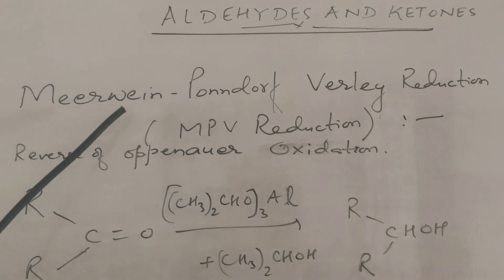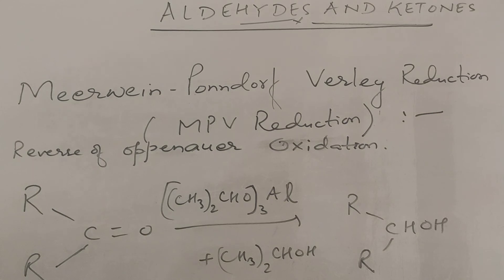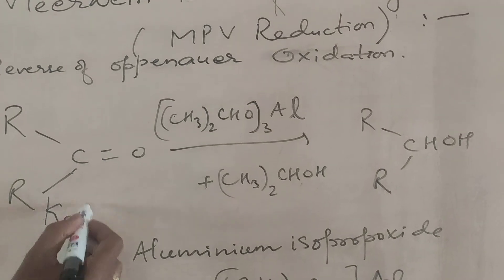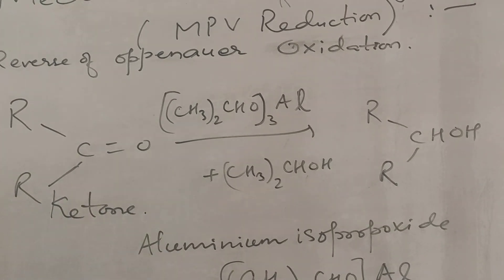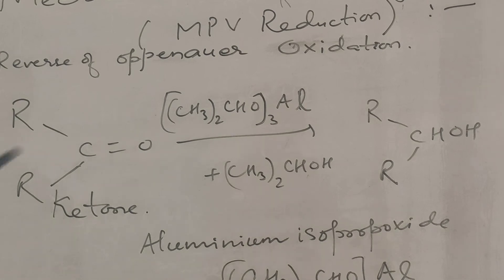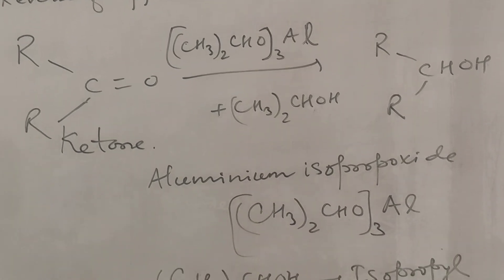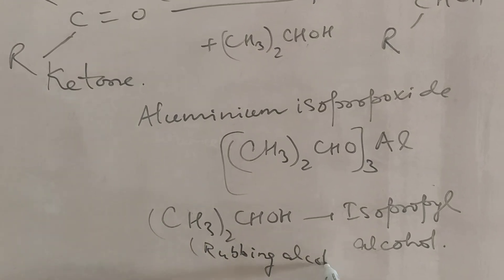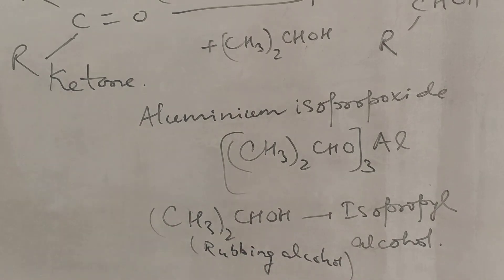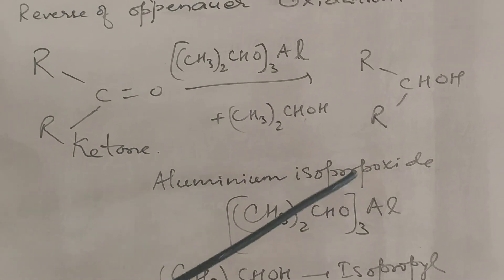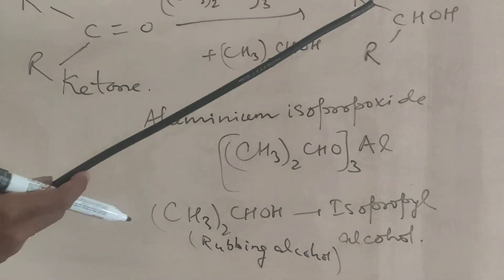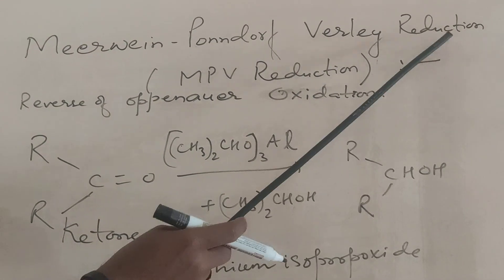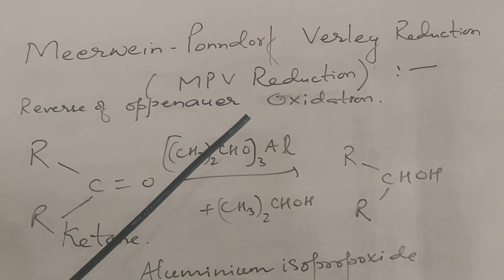Now we are going to discuss Meerwein-Ponndorf-Verley (MPV) reduction, which is the reverse of Oppenauer oxidation. A ketone is treated with aluminum isopropoxide in the presence of isopropyl alcohol (also called rubbing alcohol), and we get a secondary alcohol. This reaction is called MPV reduction and is the reverse of Oppenauer oxidation.